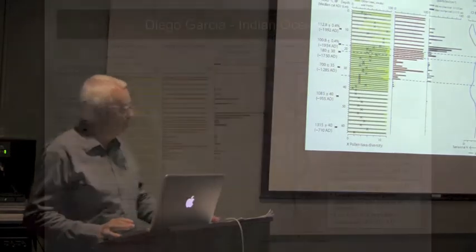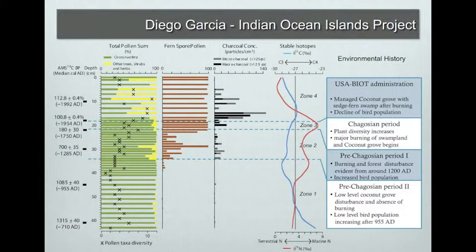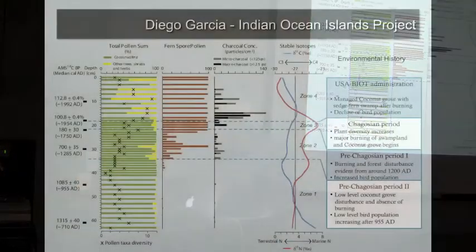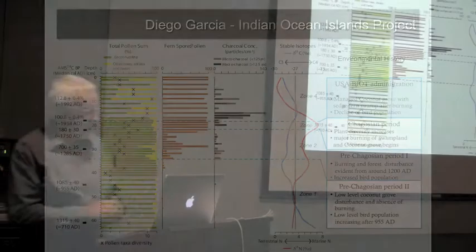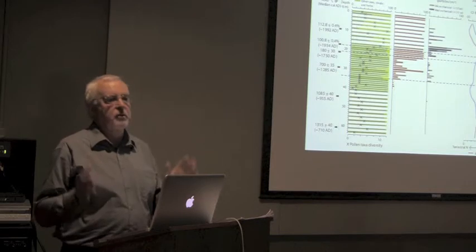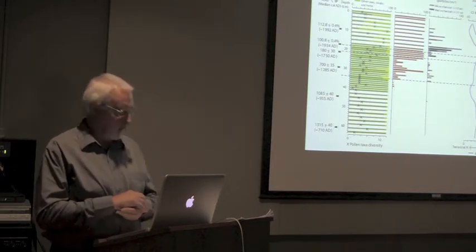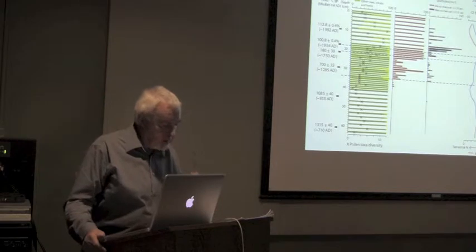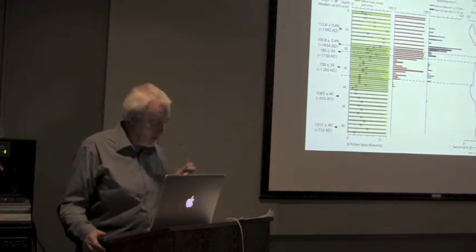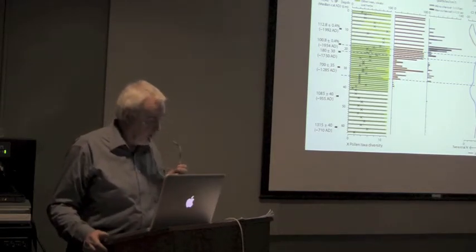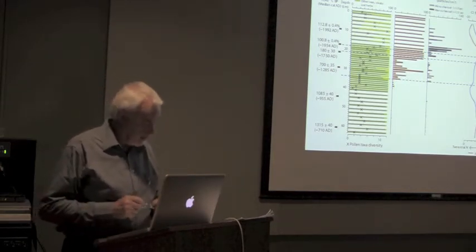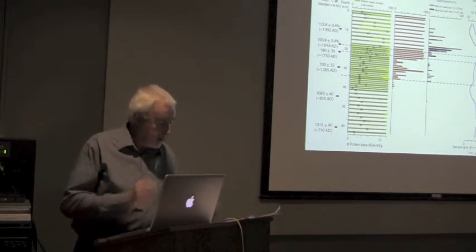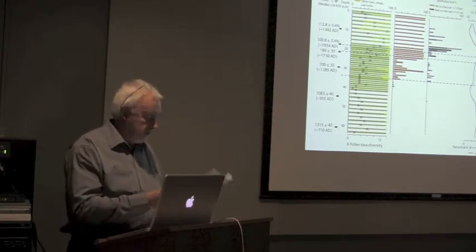However, when we went to the Chagos Islands working on Diego Garcia, we did find that there was a certain amount of charcoal coming in at about this point here, around AD 1300. We think that there was at least some kind of contact, some visit, but we could never find any archaeological evidence of any kind to suggest that Diego Garcia had ever been colonized. Genetic analysis of the bones of commensal animals, which we collected on various of these islands, especially of rats, has also failed to disclose any evidence of pre-European colonization.